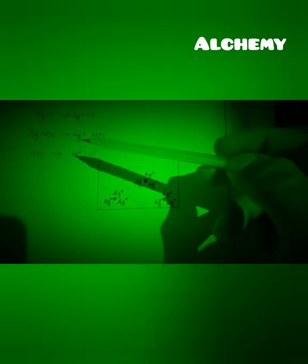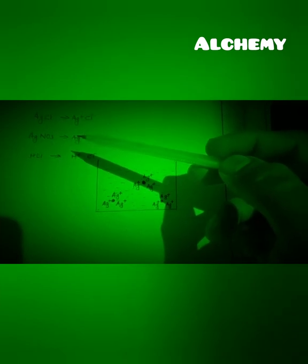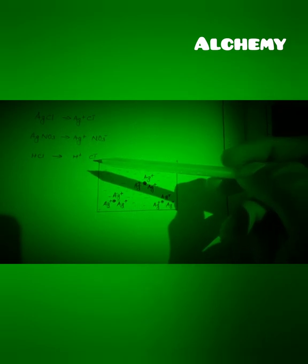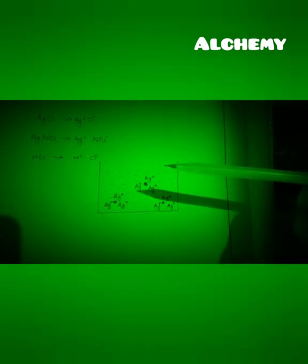Here, AgNO3 dissociates into Ag+ and NO3-. Here we have Ag+ and Ag+ common. What about HCl? HCl dissociates as H+ and Cl-. In this case, we have got the Cl- as the common ion.